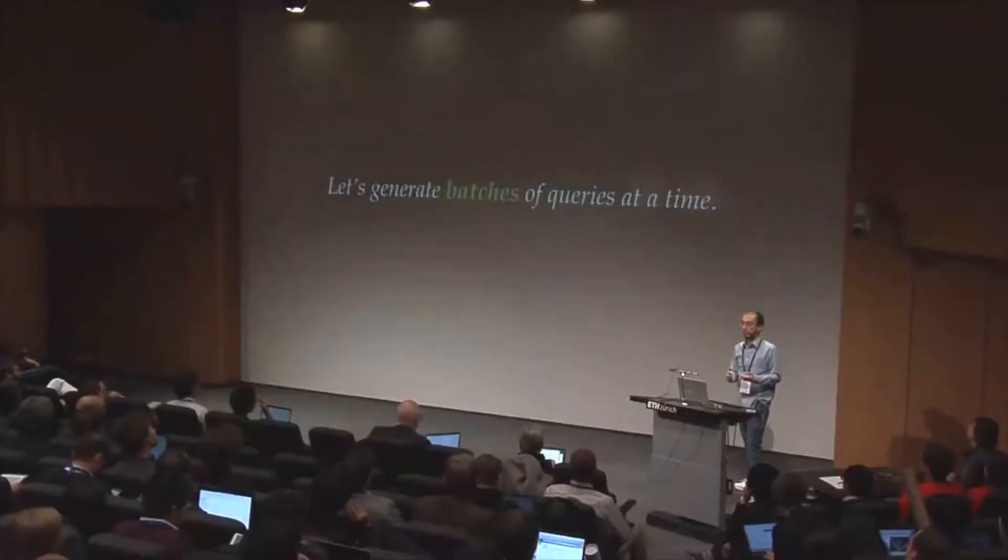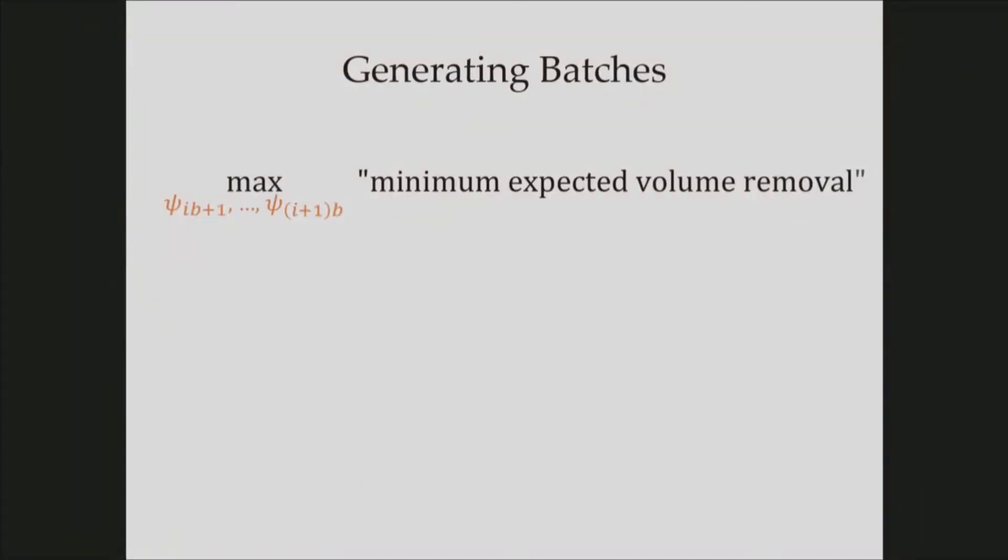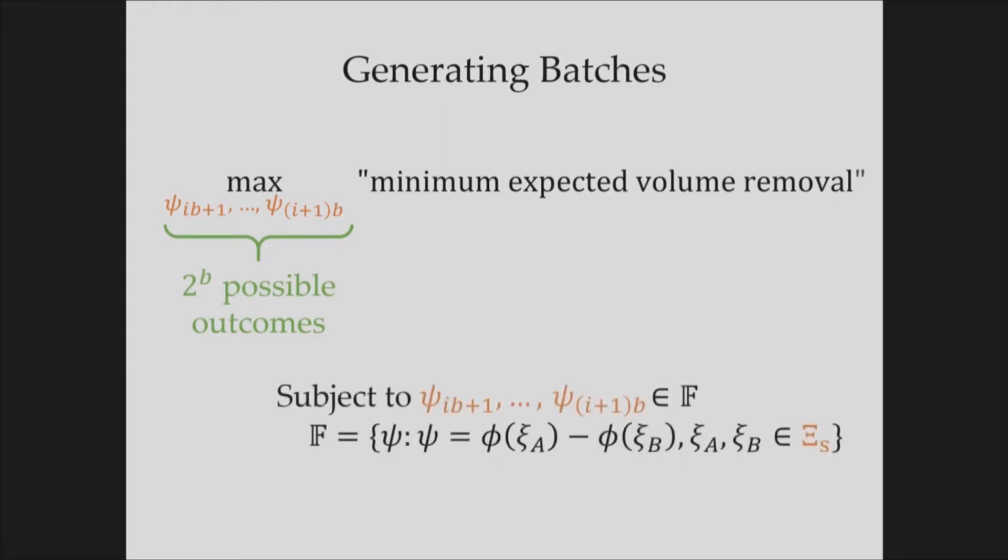So more technically, we need to solve the optimization and we need to perform sampling for each and every query, and it takes too much time. This is obviously undesirable. So our solution is to generate batches of queries instead of single queries. To do that, we are slightly modifying our optimization. We still want to maximize the minimum expected volume removal, but it's now the volume that will be removed after a batch of queries, not a single one. So if the batch size is B, there will be 2^B possible outcomes. So the minimum will be taken over 2^B different terms.